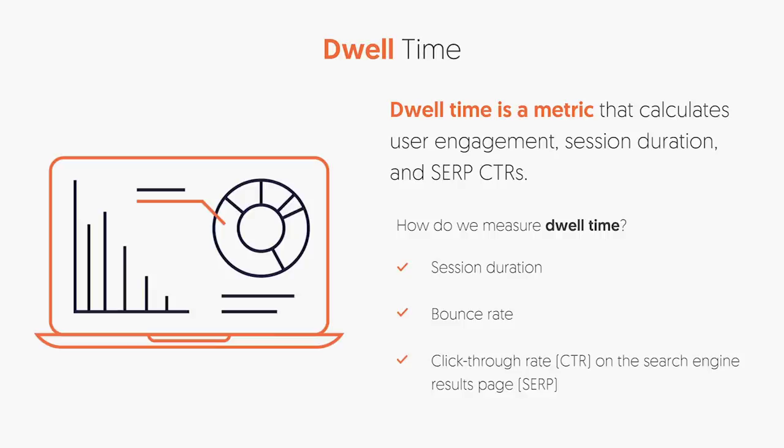So how do you measure dwell time? It's session duration — is someone staying on your website for a long time? Bounce rate — are they just bouncing off and going to a different website or going back to Google because they're not happy with what they're seeing? And click-through rate — when someone's doing a Google search and they find a keyword, are they clicking on your listing more than the competitors?